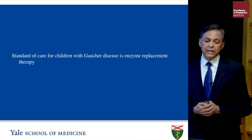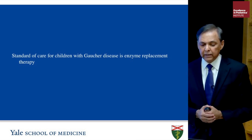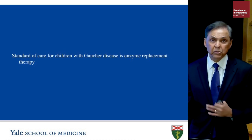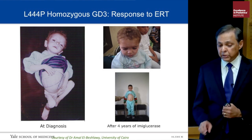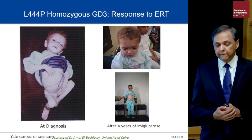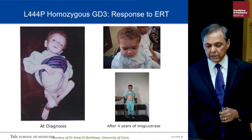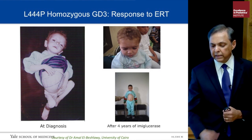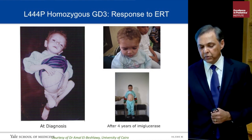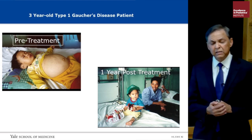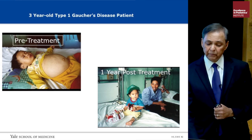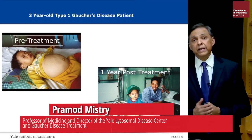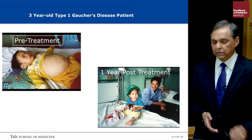In conclusion, the standard of care for children with Gaucher disease is enzyme replacement therapy. A patient I saw during infancy, desperately sick with massive hepatosplenomegaly and cachexia, showed remarkable recovery by age 4 after initiation of imiglucerase enzyme replacement therapy. Another child I saw in China with hepatosplenomegaly was very sick, but within one year of enzyme replacement therapy showed dramatic improvement. That brings me to the end of my presentation — I would be happy to take any questions. Thank you.